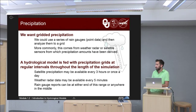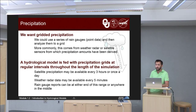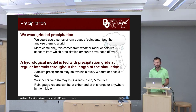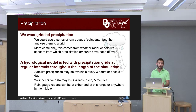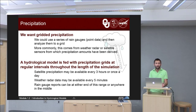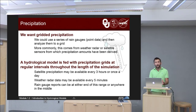We generally prefer gridded precipitation. We can get that either by using a series of rain gauges or point data and analyzing them onto a grid so that we have values everywhere, or we can use weather radar or satellite estimates directly — and those are already grid-ready. A hydrological model is fed with precipitation grids at regular intervals throughout the simulation. A satellite may provide estimates every three, six, or twelve hours; weather radar every two to ten minutes; rain gauges every minute or once a day. Those intervals help guide how often you want to run a hydrological model.